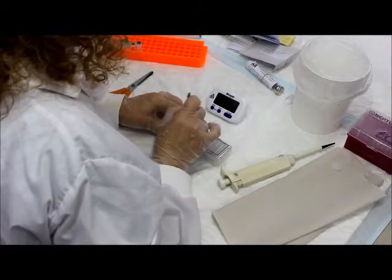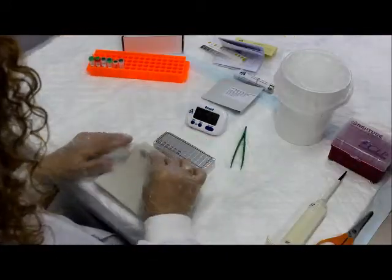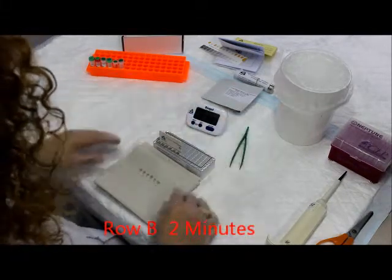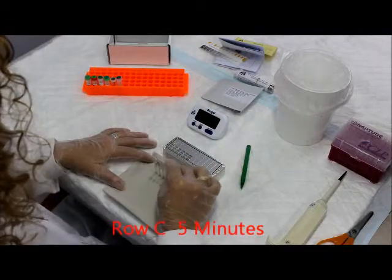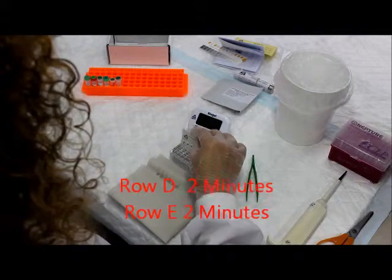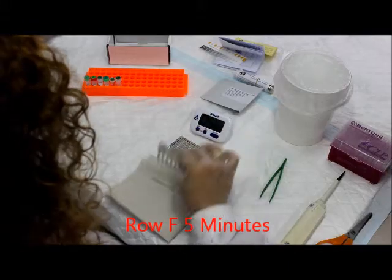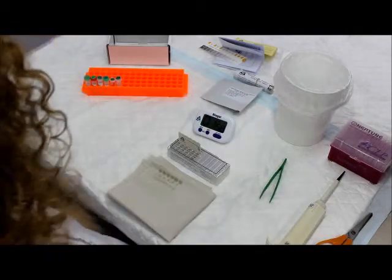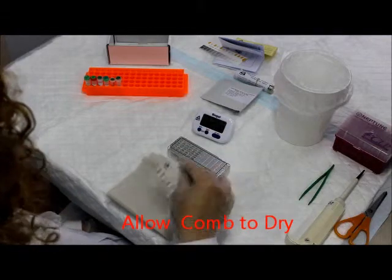Use tweezers to pierce the foil in the next row, which would be row B, and insert comb for 2 minutes. Gently shake off excess liquid from the comb teeth onto a piece of tissue. Insert the comb into the next well, row C, for 5 minutes. Place the comb into the remaining wells, row D and E, for 2 minutes, and the last well, which is row F, for 5 minutes. Upon completion of the color development in row F, move the comb back to row E for the next 2 minutes for color fixation. Take the comb out and let the comb dry for 1 to 10 minutes.